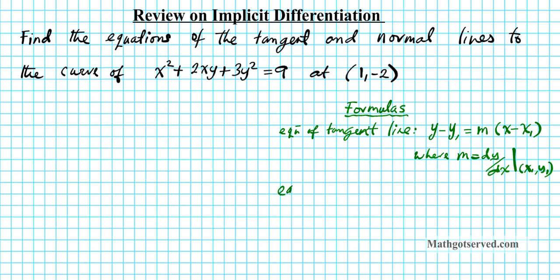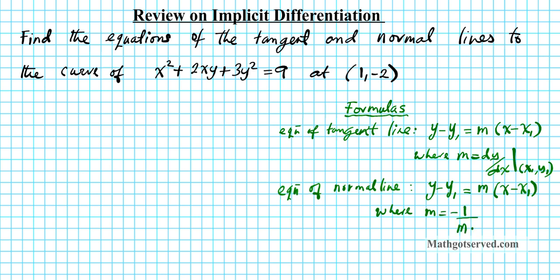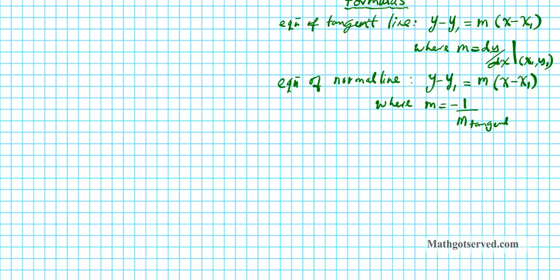For the equation of a normal line, it's also y minus y1 equals m times (x minus x1), but here the slope m is equal to the negative reciprocal of the slope of the tangent. So you take the slope of the tangent line, do the negative reciprocal, and plug it into the point-slope equation. Now let's apply that to this problem.